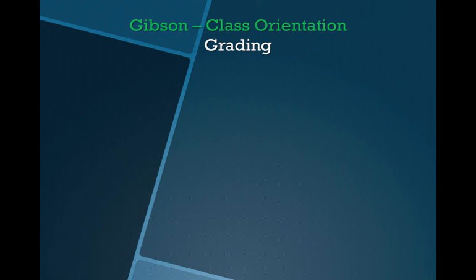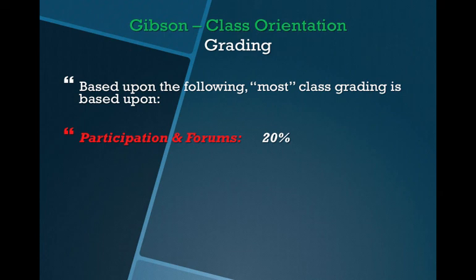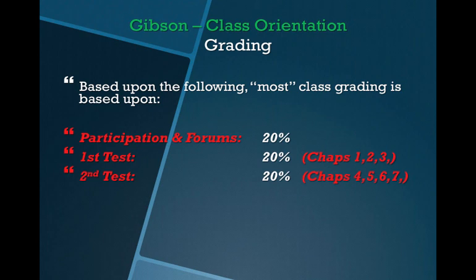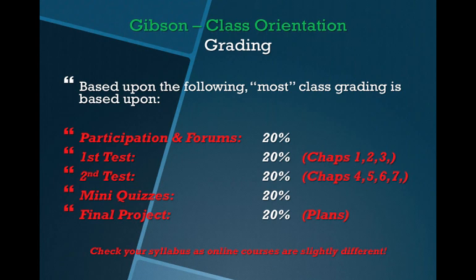The grading process: forum participation is about 20% of your grade. The first test — Chapters 1, 2, and 3 — is another 20%. The second test — Chapters 4, 5, 6, and 7 — is another 20%. About six mini quizzes scattered throughout the semester make up 20%, and your final plan projects are 20% as well. Check the syllabus for more detail; make sure to keep the latest version when it's sent to you.